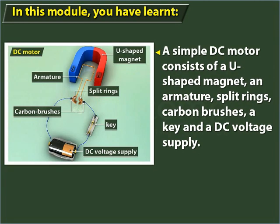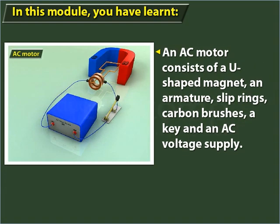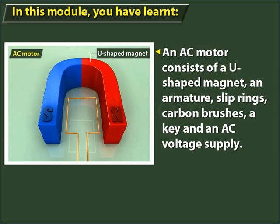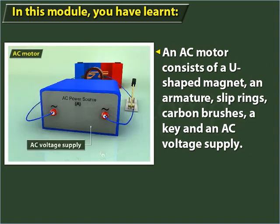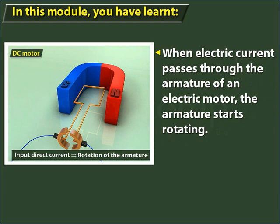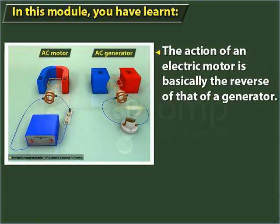A simple DC motor consists of a U-shaped magnet, an armature, split rings, carbon brushes, a key and a DC voltage supply. When electric current passes through the armature of an electric motor, the armature starts rotating. The action of an electric motor is basically the reverse of that of a generator.